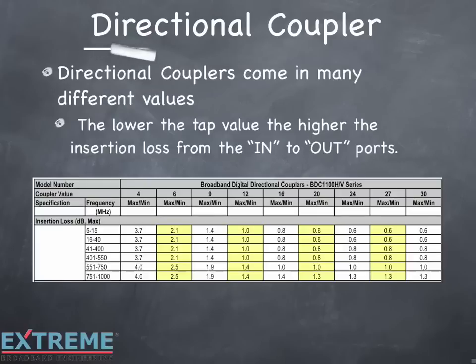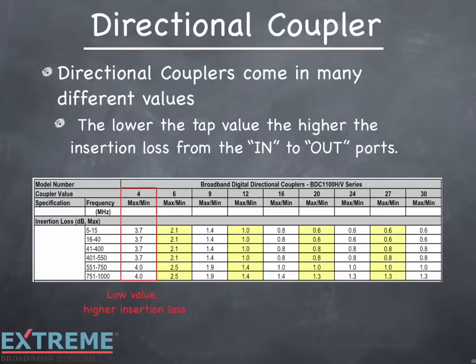Directional couplers come in many different values. The lower the tap value, the higher the insertion loss from the in to the out ports. Here's a specification sheet for our broadband digital directional couplers. Looking at the 4 value, the insertion loss ranges from 3.7 dB at 5 MHz up to 4 dB at 1 GHz. On the 30 value directional coupler, the insertion loss ranges from 0.6 dB to 1.3 dB. So the lower the value, the higher the insertion loss; the higher the value, the lower the insertion loss.